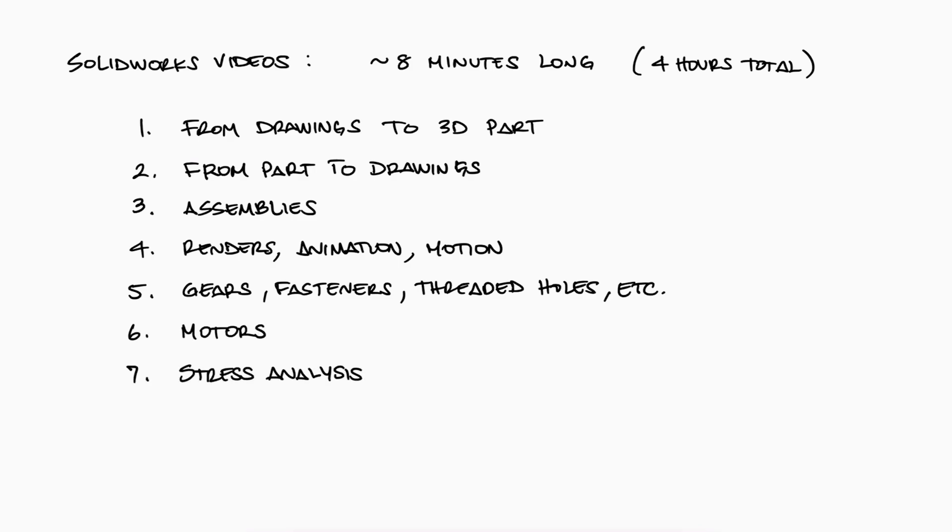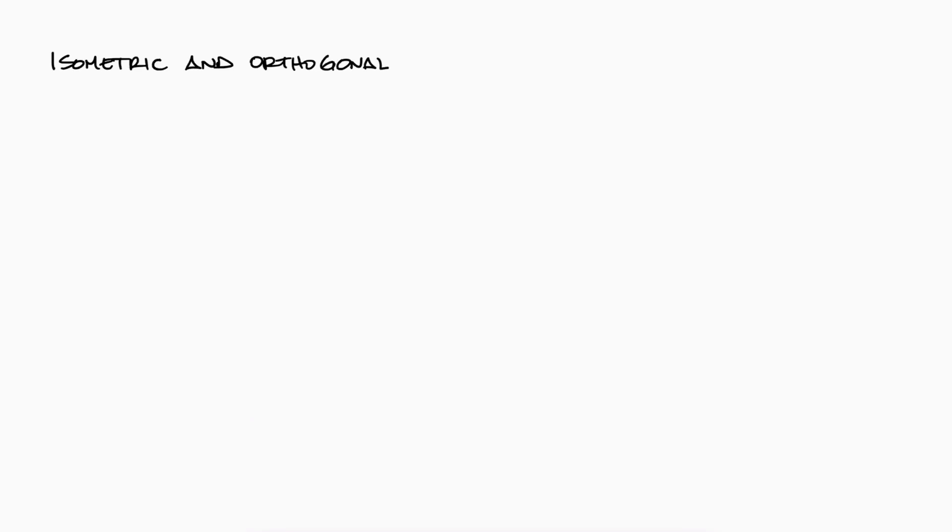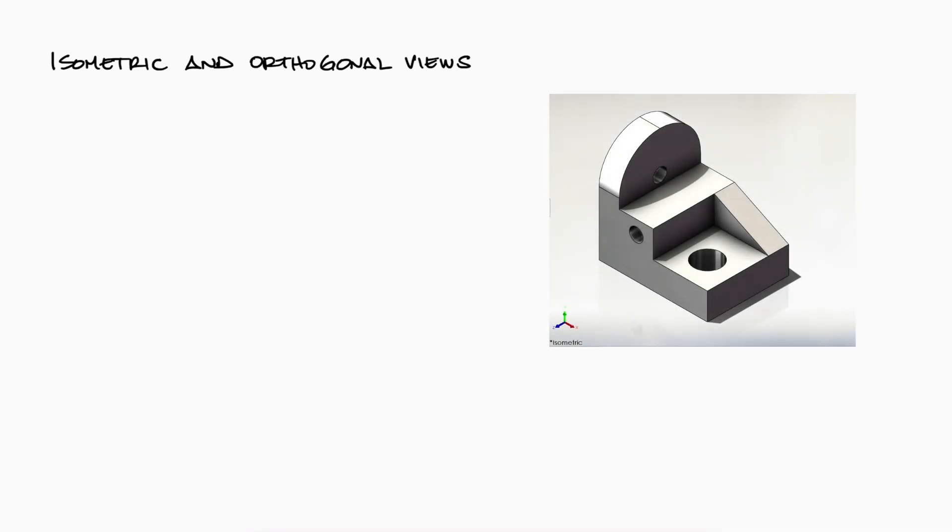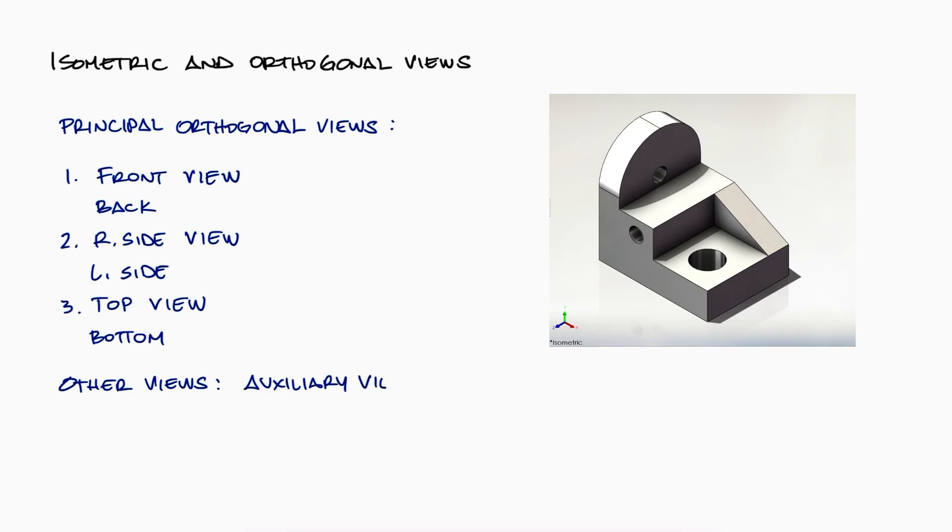So let's start by looking at a simple 3D part's isometric view. Part drawings of simple parts usually include three out of the six principal orthogonal views, and we call them front view, top view, and side view. However, we will learn that even more complex parts can be fully described with only one of these together with one or more auxiliary or section views.